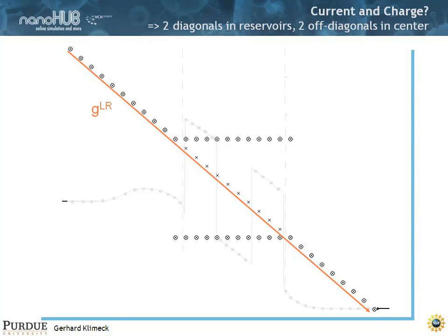So you march all the way down with a left-connected green function. And you march, you connect it, and you march all the way back up. If you do that, you have connected the left and the right contact for all the device. So you have information for all the diagonal matrix elements of the inverse.